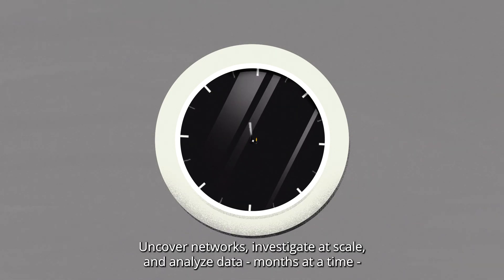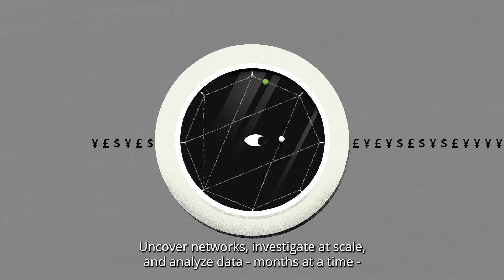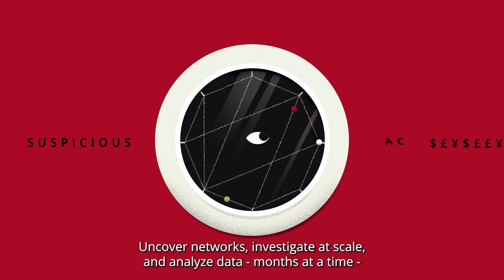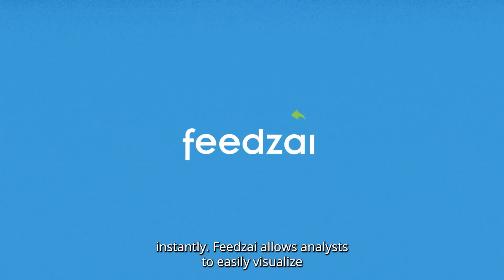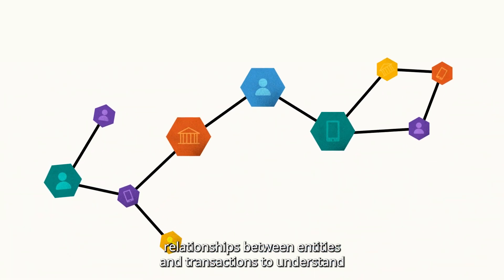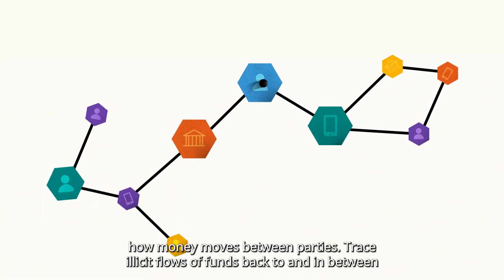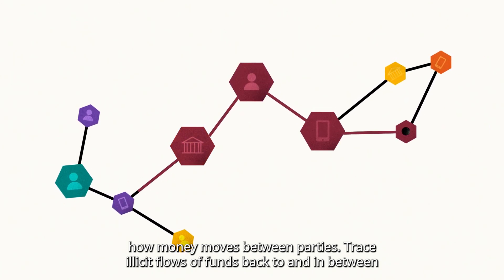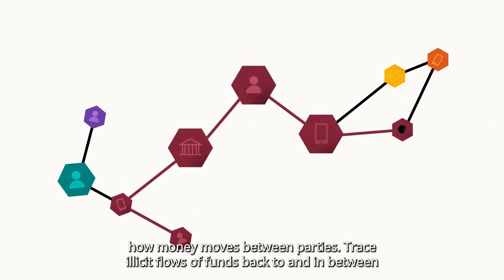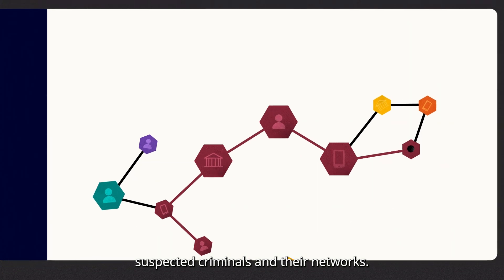Uncover networks, investigate at scale, and analyze data months at a time, instantly. FeedsEye allows analysts to easily visualize relationships between entities and transactions to understand how money moves between parties. Trace illicit flows of funds back to and in between suspected criminals and their networks.